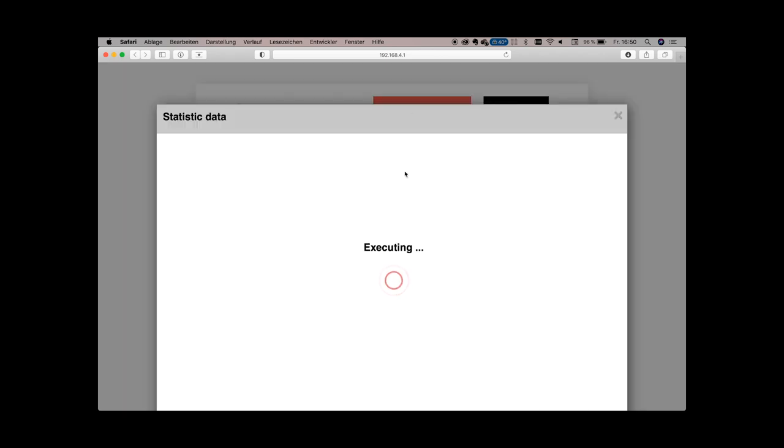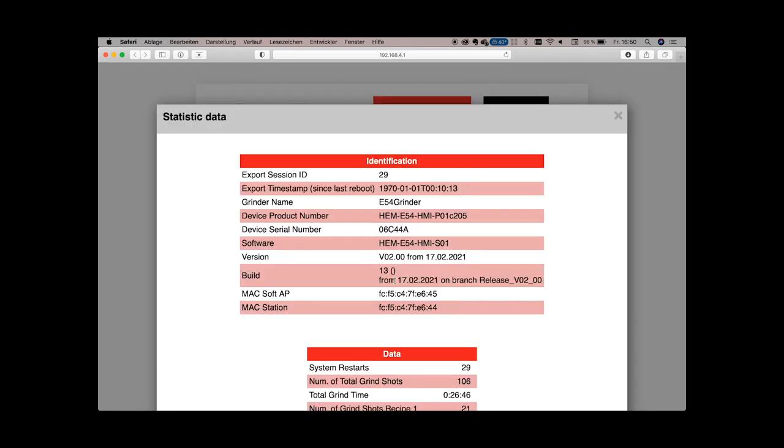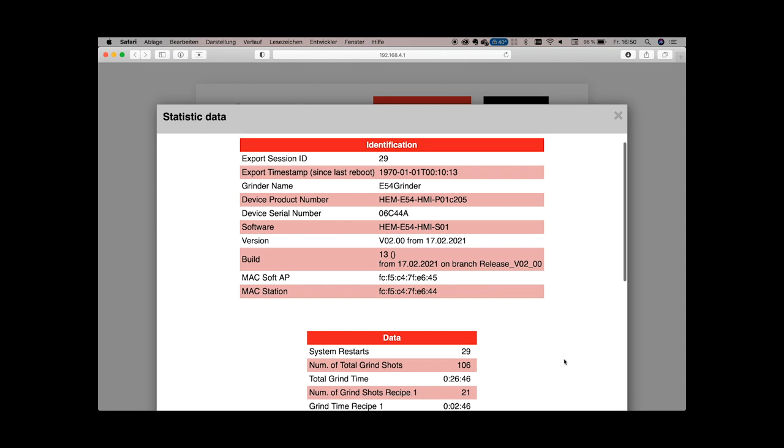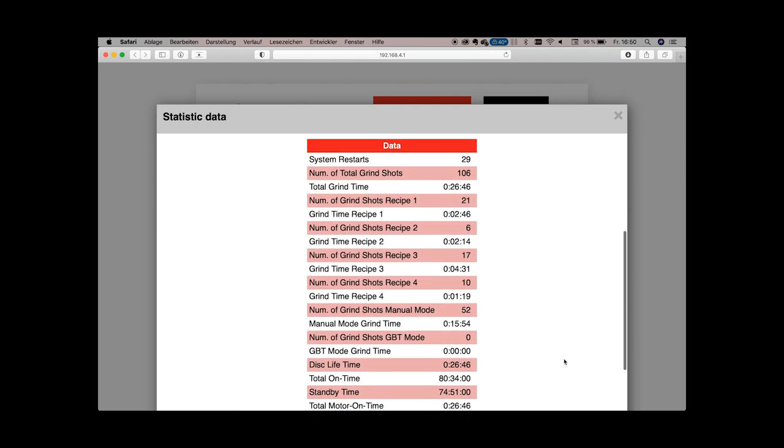What you get are overall system statistics. Like how often did you use the first shot recipe, the second one, etc.